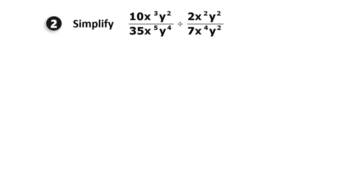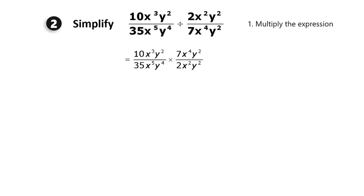Question number 2: simplify (10x³y²)/(35x⁵y⁴) divided by (2x²y²)/(7x⁴y²). The first step is to multiply the expression. Since we are dividing, we flip the second fraction and change the division sign to multiplication, giving us (10x³y²)/(35x⁵y⁴) times (7x⁴y²)/(2x²y²).